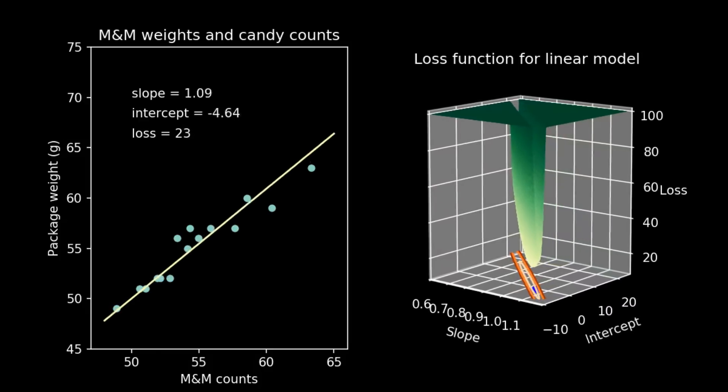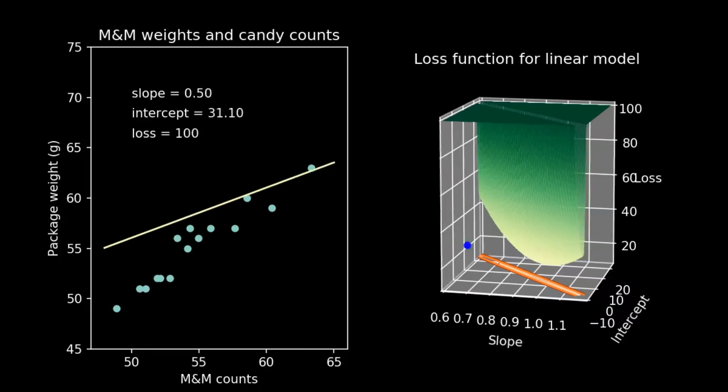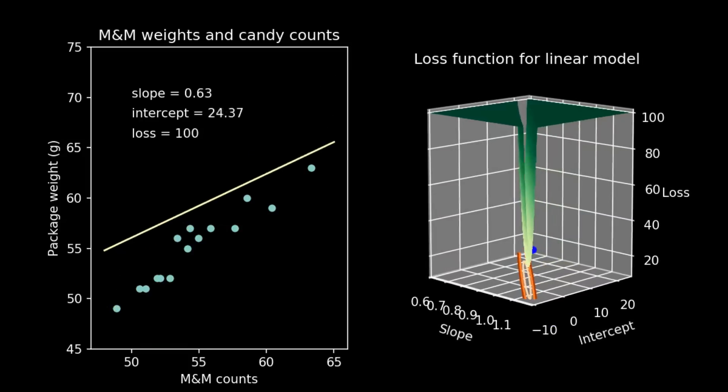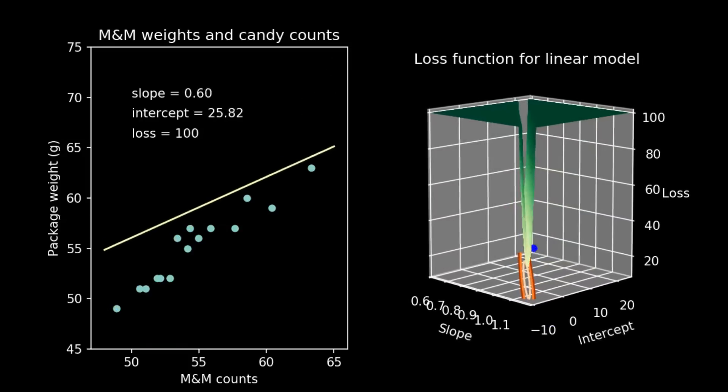It's possible to move both parameters at once. Again, we see that the value of the loss function jumps up and down, tracking the combination of parameter values we've chosen.